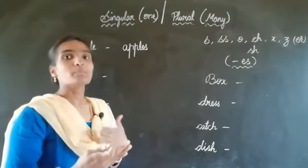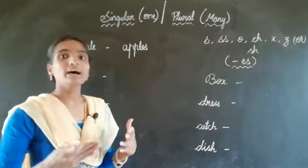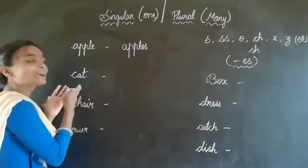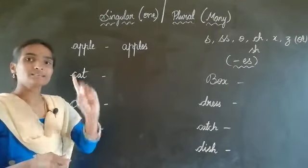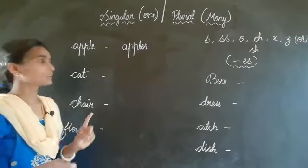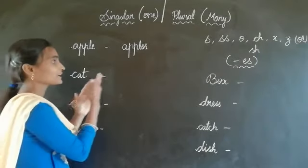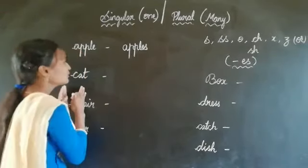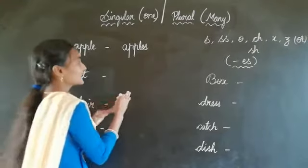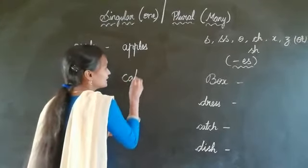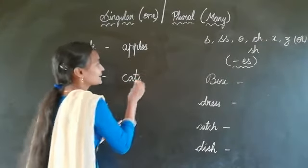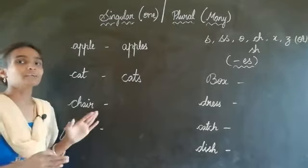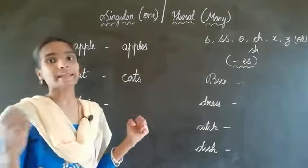It is more than one, so it comes under many. See here — cat. Cat is a single object. For a single object we are making it into plural form. For cat, if we add S, it became cats. That means many cats.